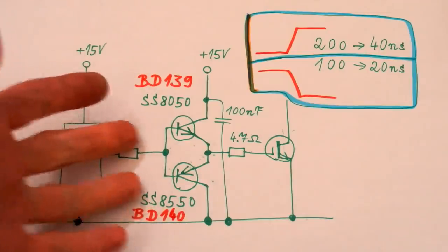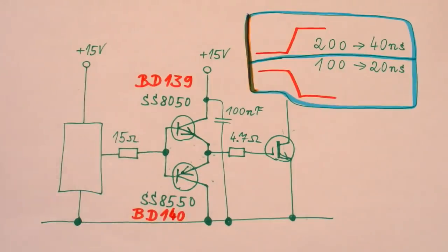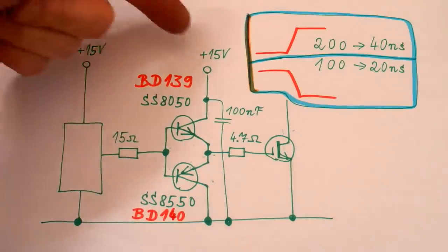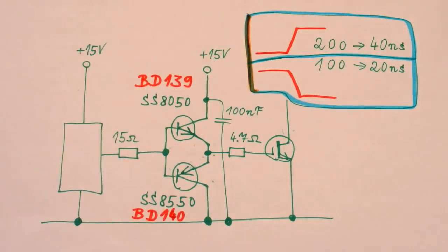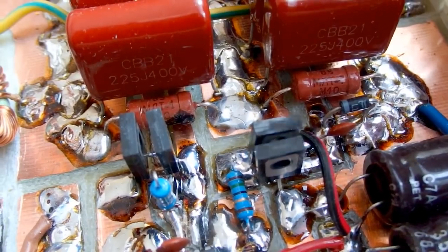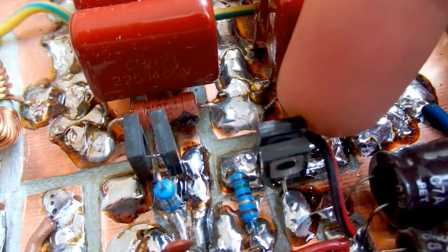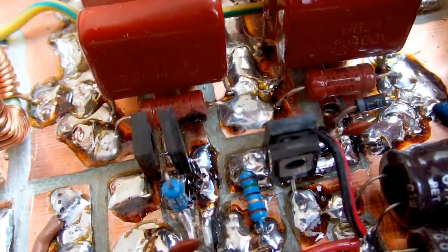And here's the schematic. And of course the upper gate driver will be the same, but the power will come from the floating power supply, of course. So, I've put pairs of gate current amplifying transistors in it for both gates.